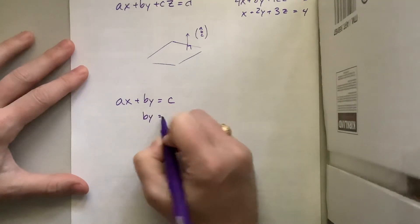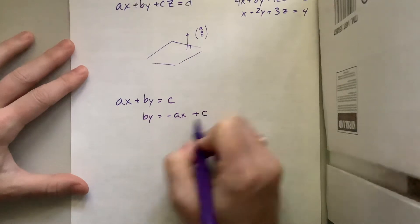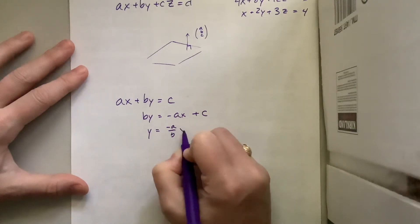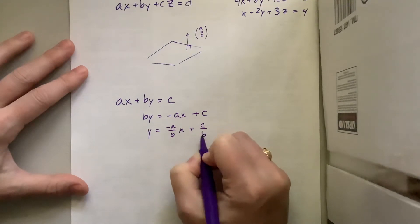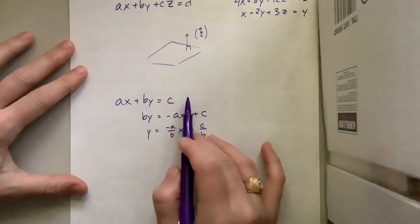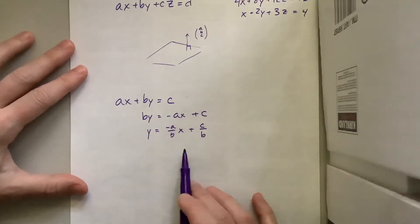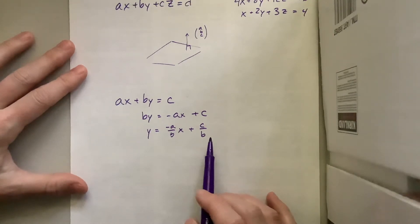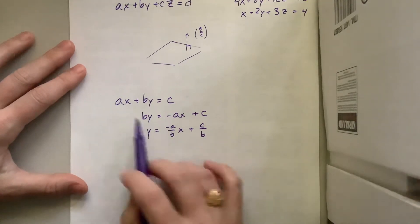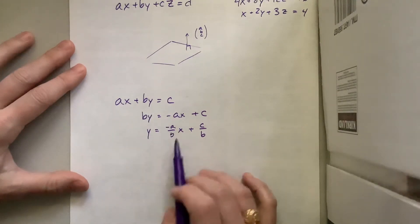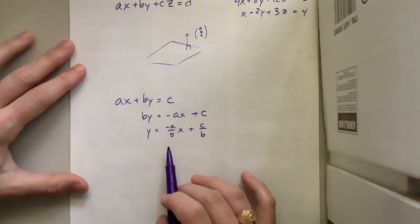So By equals negative Ax plus C and Y is equal to negative A over B times X plus C over B. So now I've taken this standard form of a line and turned it into the slope intercept form or the gradient intercept if you want to do it IB's way.